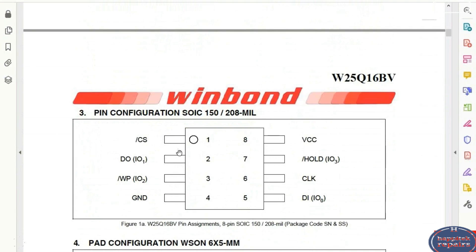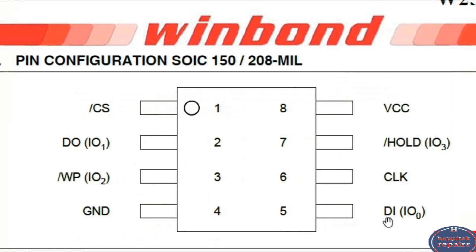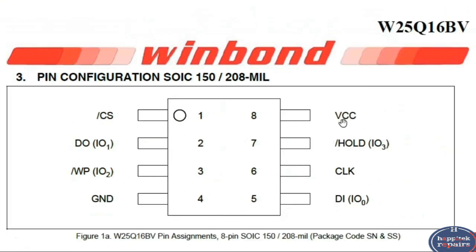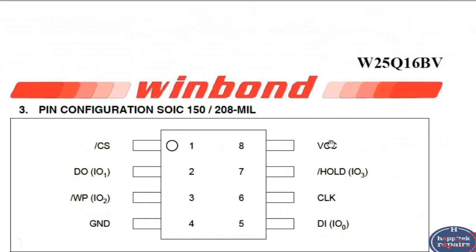Here we have pin number 1, pin number 2 — data output is on pin number 2. On pin number 3 we have write protect. Pin number 4 is ground — always, for every 8-pin BIOS, pin number 4 is connected to ground. Pin number 5 is data input. Pin number 6 is the clock for synchronization. Pin number 7 is hold, used for input/output control.